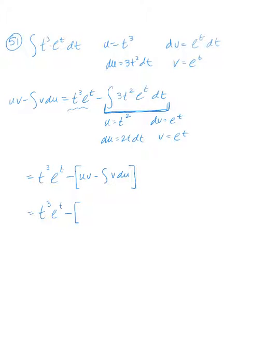So this is t cubed e to the t minus—big bracket—u times v is going to be... oops, I pulled this 3 out of the integral, so this should be minus 3 here. Okay. u times v, so I get t squared e to the t minus the integral of v times du, which is 2t e to the t dt.